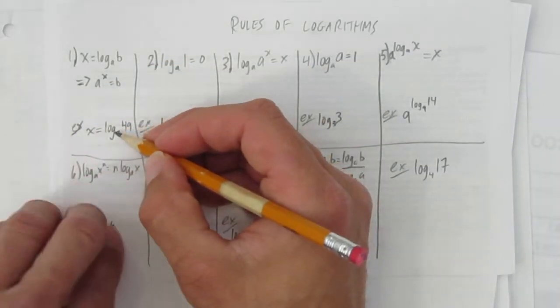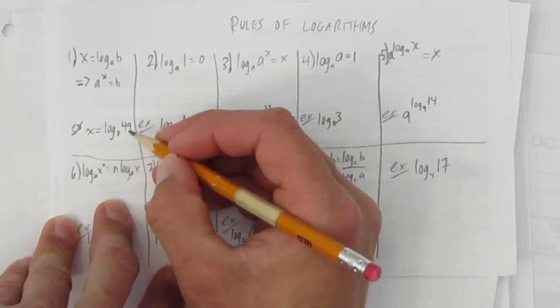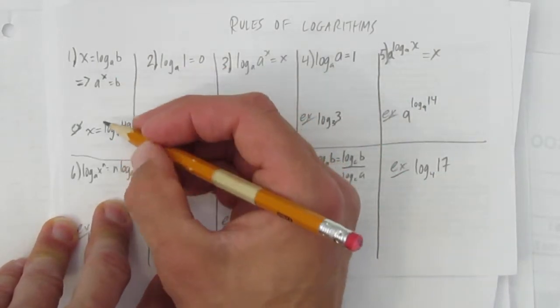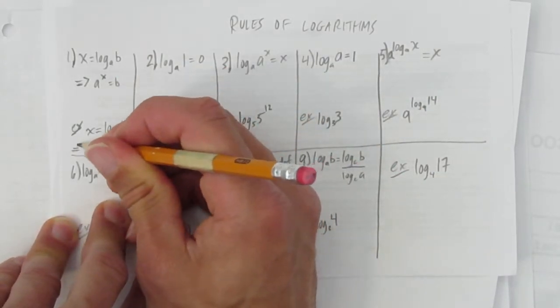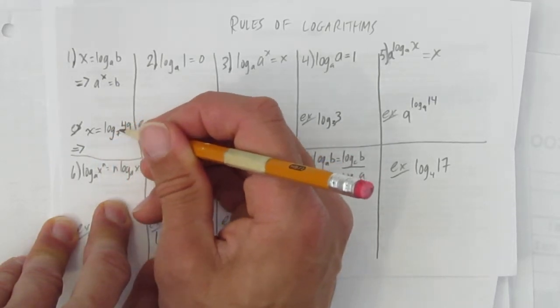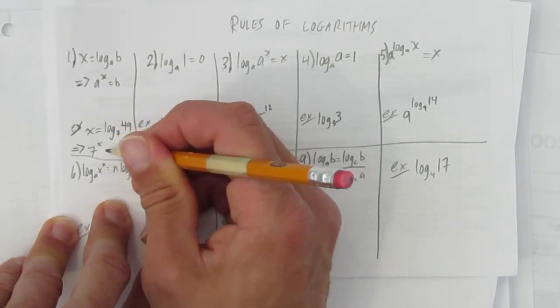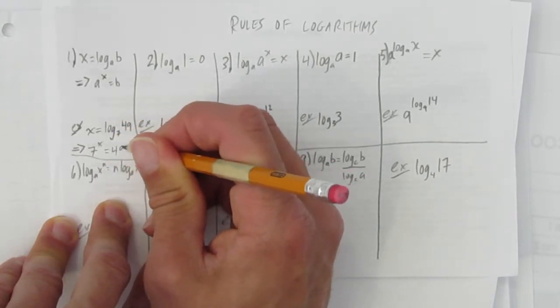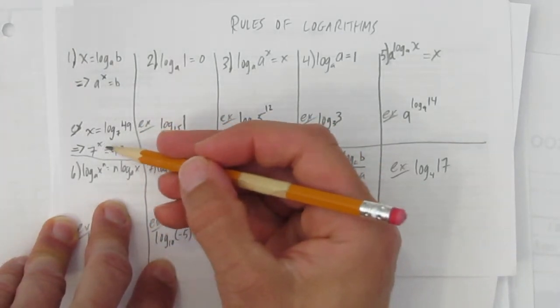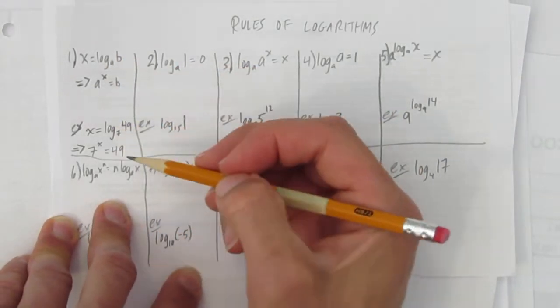So let's look at an example here. I wrote x equals log base 7 of 49. You could find the answer if you know some of the rules already, but all I want to do is practice rule one here, which is converting. By putting an implies arrow, log base 7 of 49 equals x means the base is 7, the exponent is x, and the answer is 49. You don't need to solve it. You should probably see that the answer is 2, x is 2, 7 squared is 49. But we're not interested in solving here, right now we're just practicing rule 1.